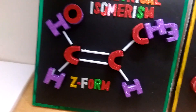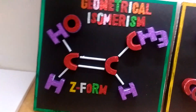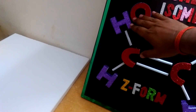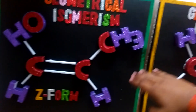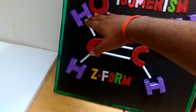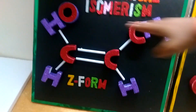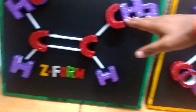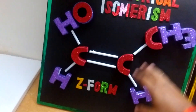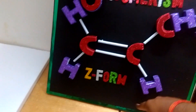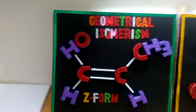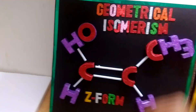In cis form the higher priority groups are on the same side, and in trans the sides are opposite. Here OH is greater on the upper side, and CH3 is also greater on the upper side — both higher priority groups are on the same side. So this is cis form, which is also known as Z form.